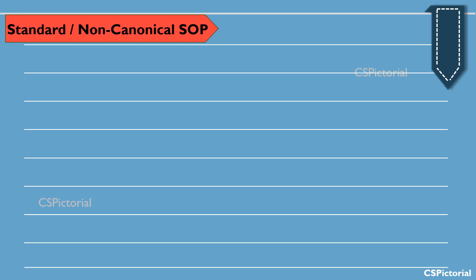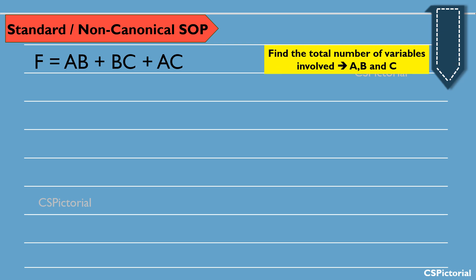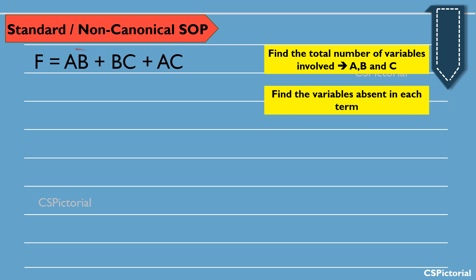This is a standard SOP expression. In a standard SOP expression, each product term need not contain all the literals. So, first find the total number of variables involved in the expression. Here, three variables A, B, and C are involved. Now find the variables absent in each term: in the first product term, variable C is missing; in the second product term, variable A is missing; and in the third product term, variable B is missing.